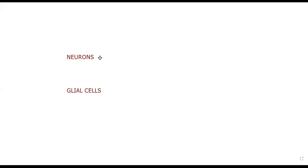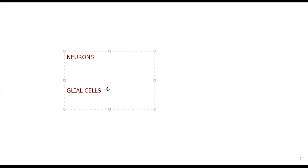Neurons are the ones capable of transmitting electrical impulses. Glial cells — the word 'glial' comes from the Greek word meaning glue.